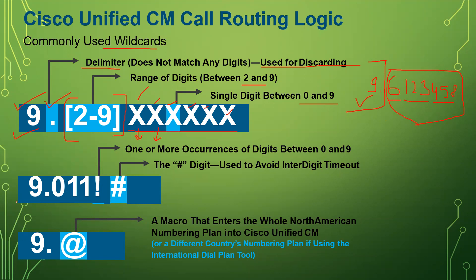Then we have the pattern 9.011!#. The nine and dot work the same way. Then we have the exact number 0, 1, 1 — this exact number should be matched for this route pattern to match.